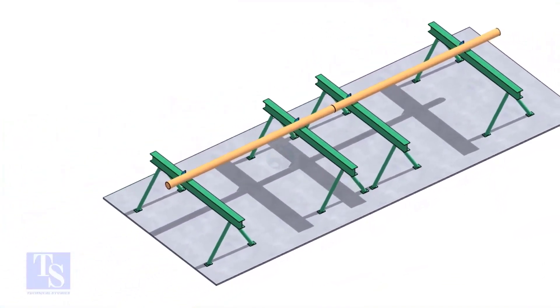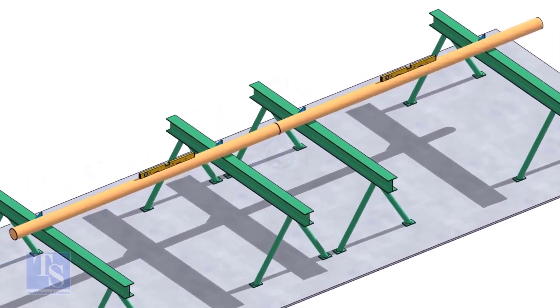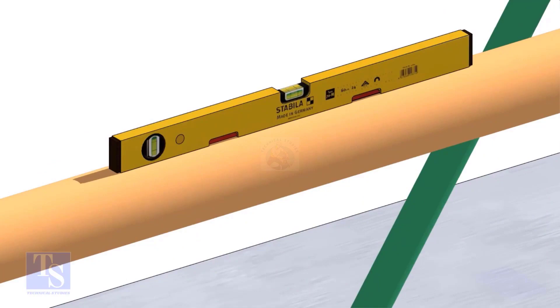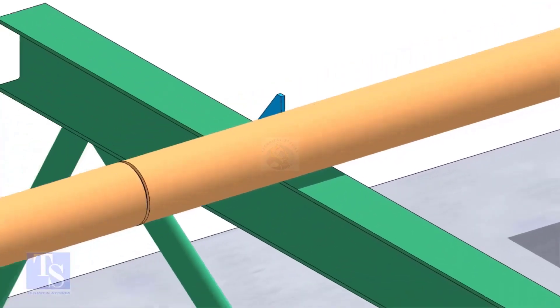Now the pipes are already straight, horizontally and vertically. You can cross-check the level of the pipes.